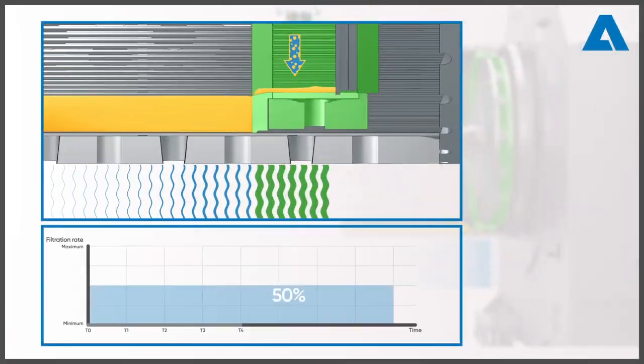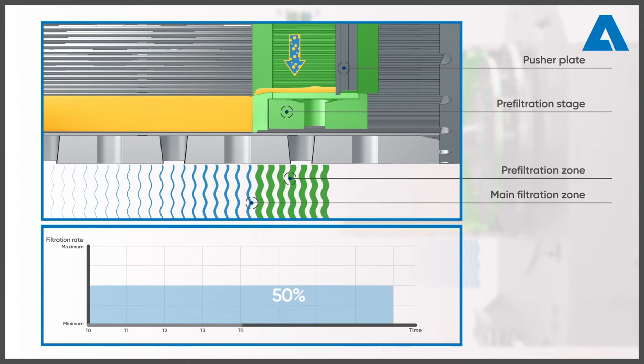It is shown here in the far left position. It is covered with a thin uncompressed layer of solid cake. This allows a maximum filtration rate in the pre-filtration zone which is marked here in green.